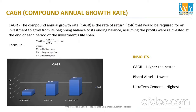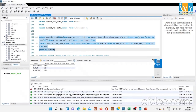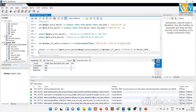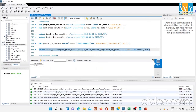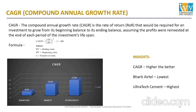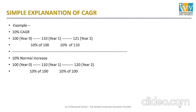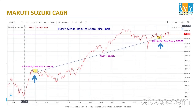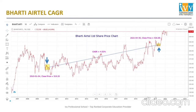Here's the code for Maruti Suzuki's CAGR — it's 13.41%. We can similarly calculate for other companies. Bharti Airtel's CAGR during the specified time period is 4.52%, Maruti Suzuki's is 13.41%, and Ultratech Cement's is 17.96%. I've also represented this on the chart from 4th January 2010 till 30th April 2021.